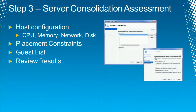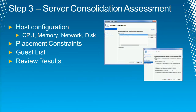That covers steps one and two — running the inventory and running the performance collection. Once MAP has these two datasets — hardware/software information and server performance information — the third step is where you actually start the virtualization assessment. In this step, you need to know your target hardware: number of processors, memory, disk capacity, network throughput. Once you have that information, you provide it to MAP and it generates recommendations.